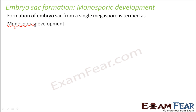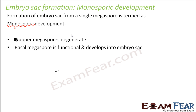Mono means one, spore equals the megaspore, so development from one megaspore is called monospore development. Now let us see how exactly this monospore development takes place. There were four megaspores formed, but out of those four only one is going to be functional — the others are going to degenerate. The upper megaspores degenerate, but the basal megaspore is functional and develops into the embryo sac.